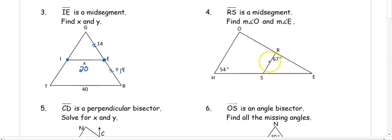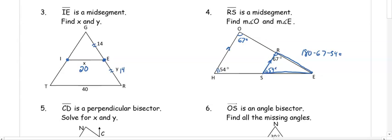In number four, remember that a mid-segment is parallel to the third side, so we can use corresponding angles. R and O are both 67 degrees. H and S are both 54 degrees. To get angle E, we focus on the triangle where we already know two angles and subtract 67 and 54 from 180, giving us a missing angle of 59 degrees.